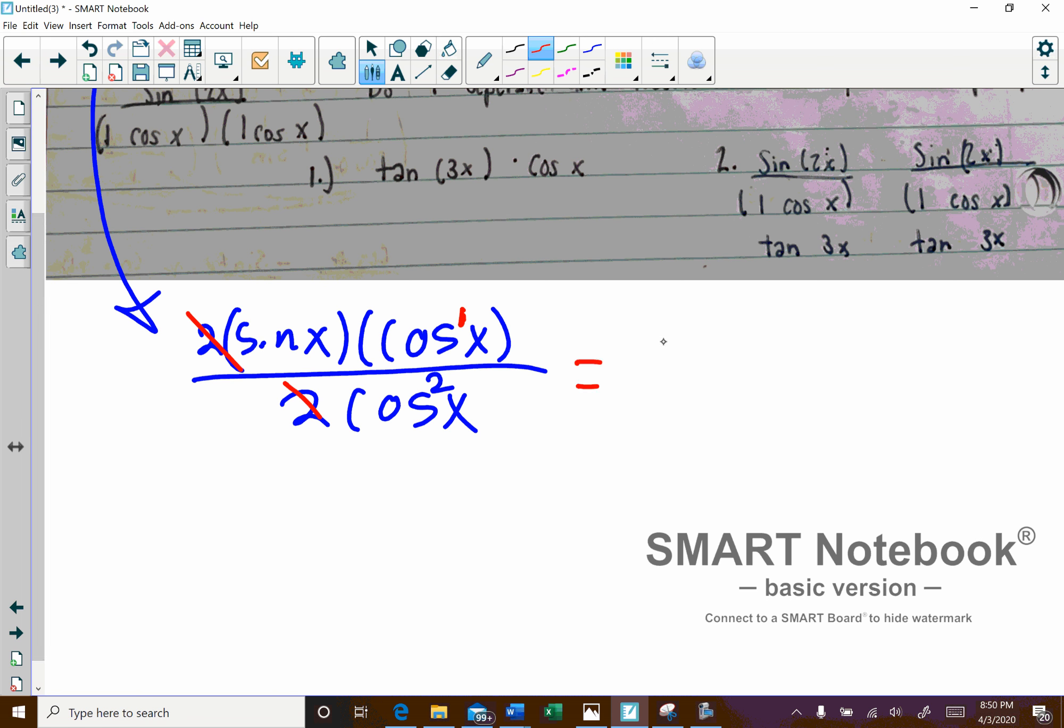So when those cosines cancel out, we're going to end up with sine x on top over cosine x. And then that should just reduce by the quotient identity into tangent x.